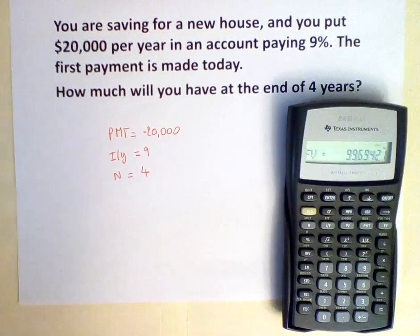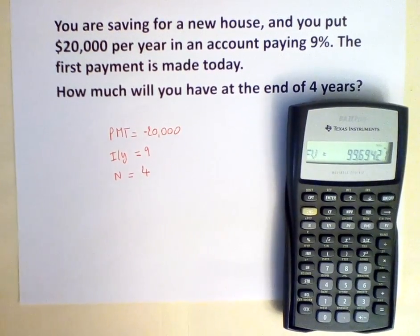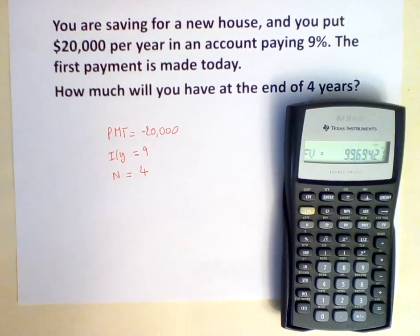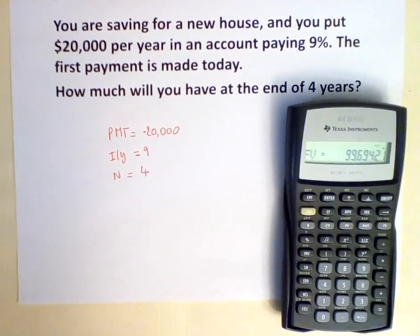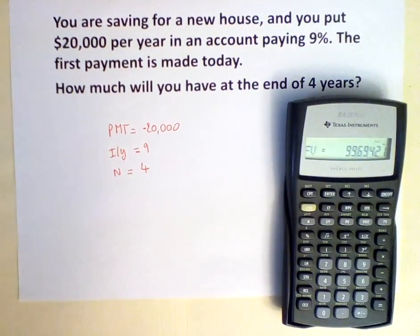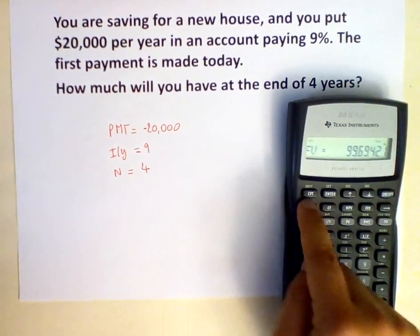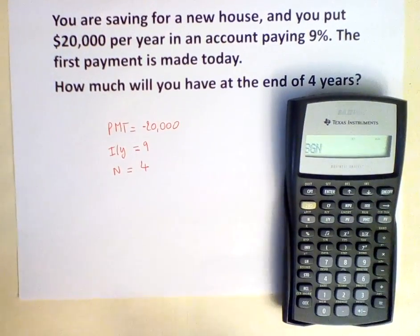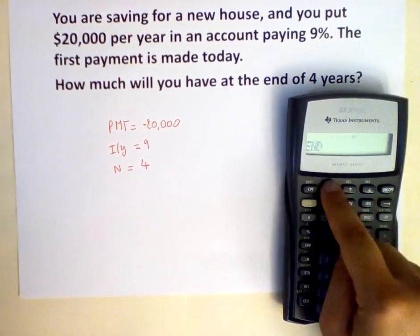Now that you are done calculating the annuity due, you may need to reset the calculator to end mode. To do so, you hit second, PMT, second, enter.